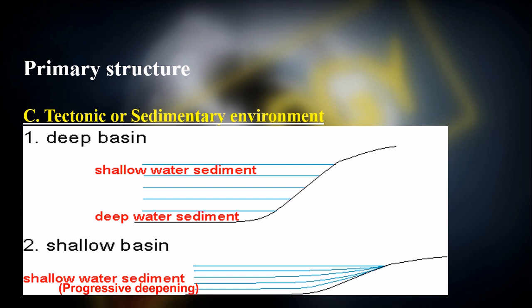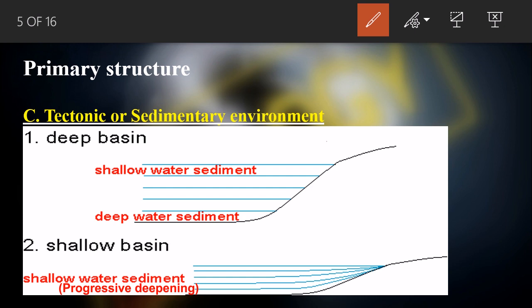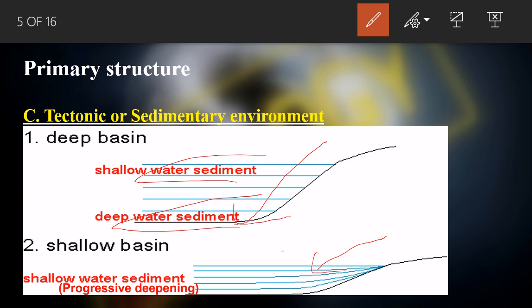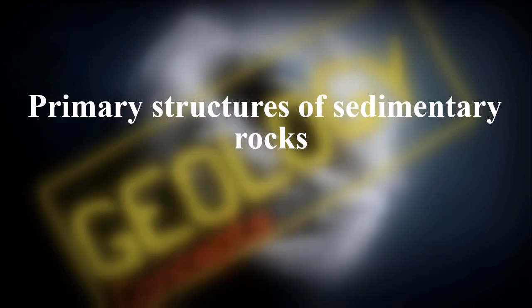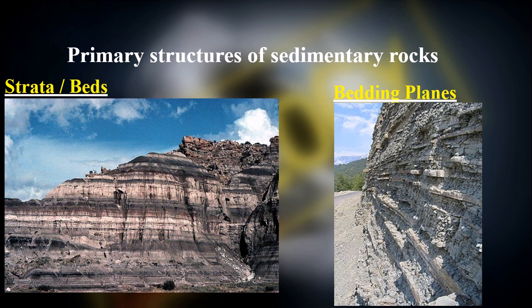Primary structures also help us understand the tectonic environment and sedimentary history. Different structures form in different settings — deep water sediments, shallow water sediments, or progressively deepening basins each produce unique features. We can see ripples, lacustrine deposits, and lake deposits, all of which have unique characteristics tied to their depositional environment.